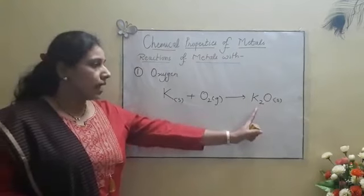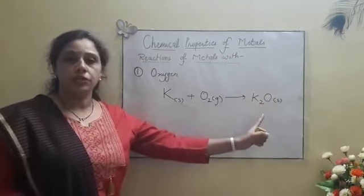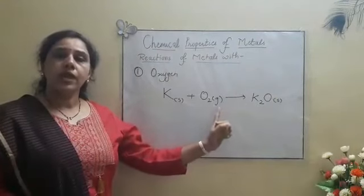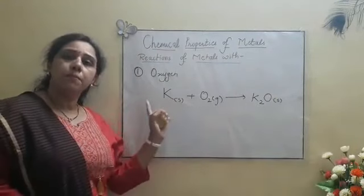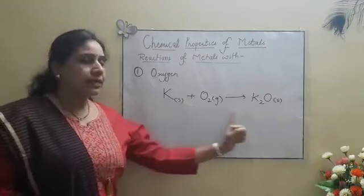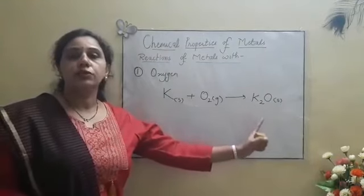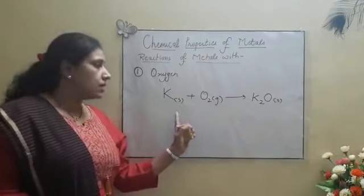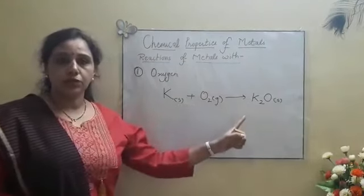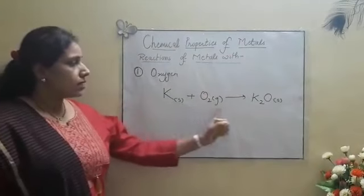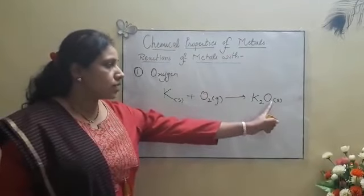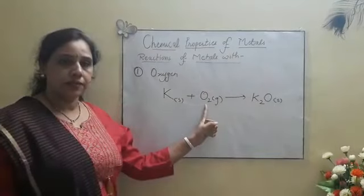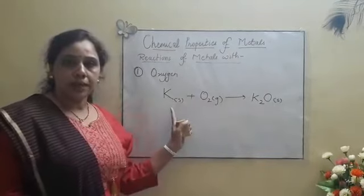Whenever we will write a chemical equation, we have to write a balanced chemical equation. So after writing the skeletal equation, we need to check whether each atom of every element is balanced both sides or not. Now here we can see oxygen atoms are 2 at the left hand side but they are 1 at the right hand side. Same way potassium is also not balanced.